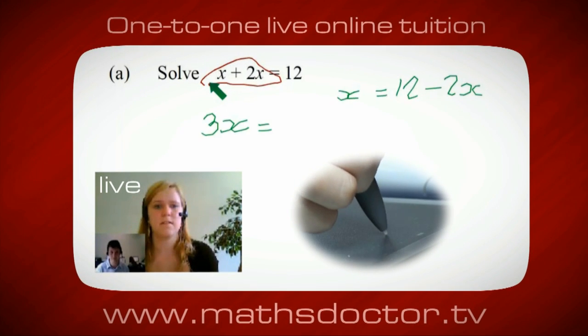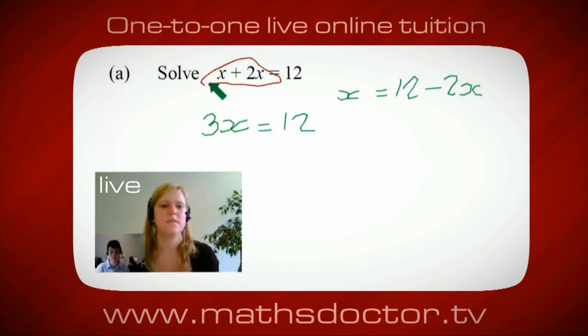Yeah, absolutely. So, 3x equals 12. Oh, and so, x equals 4. Brilliant. Spot on. Well done.